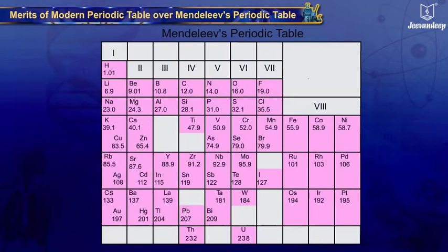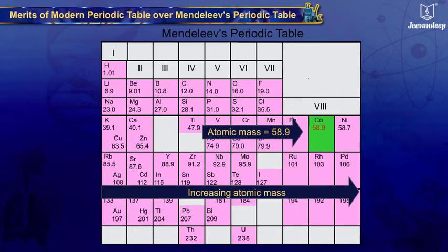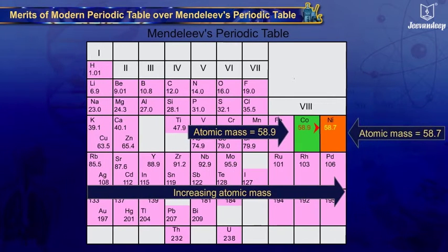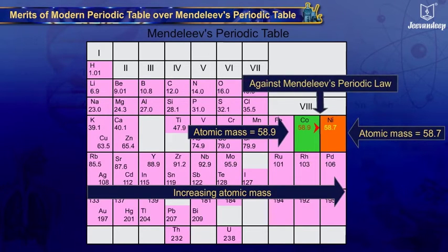In Mendeleev's Periodic Table, cobalt with atomic mass 58.9 is placed before nickel with atomic mass 58.7. This placing is against Mendeleev's Periodic Law.